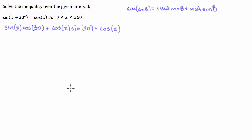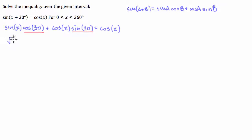From here, we can substitute in the actual values of those two trigonometric ratios. We know that cosine of 30 is square root 3 over 2, and we're going to multiply that by sine of x.